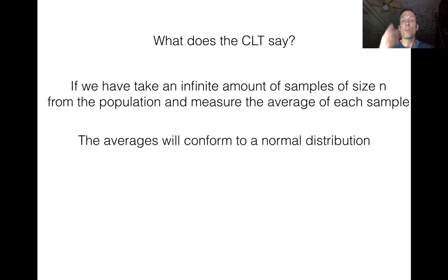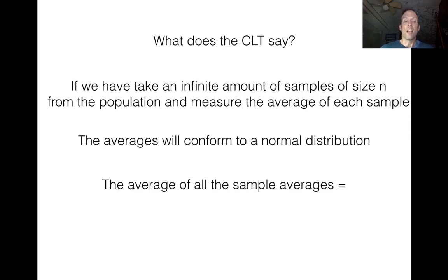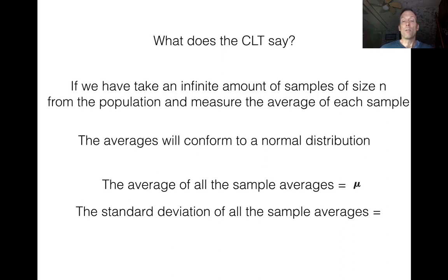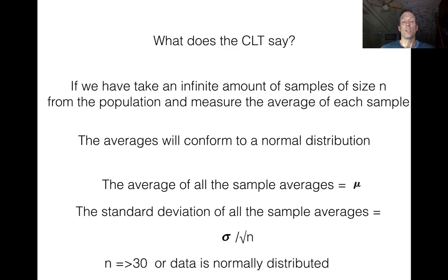A normal distribution has two parameters: an average and a standard deviation. If we take all of our sample averages and calculate the average of all the averages, we get back exactly the population average mu. If we take all the sample averages and calculate their standard deviation, we get the standard deviation of the population divided by the square root of n. The only catch is we have to make sure our sample size is greater than or equal to 30.